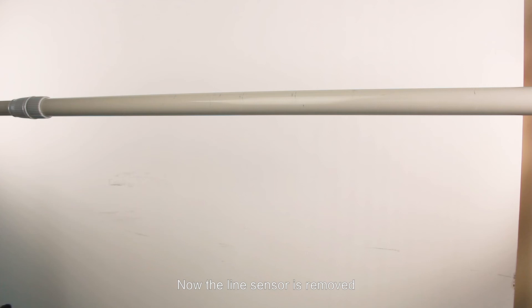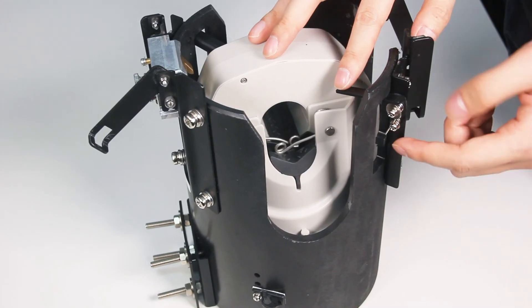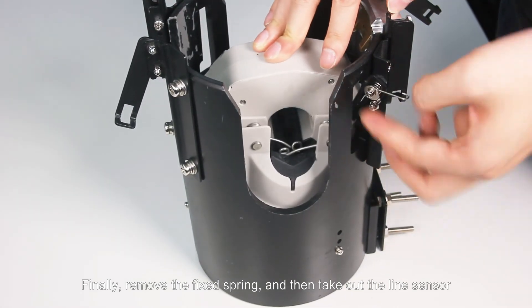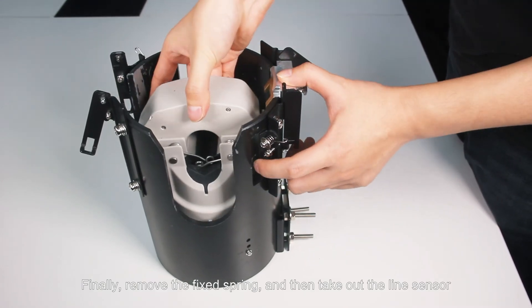Now the line sensor is removed. Finally remove the fixed spring and then take out the line sensor.